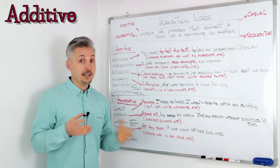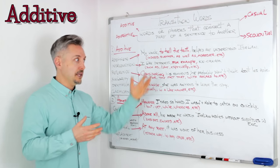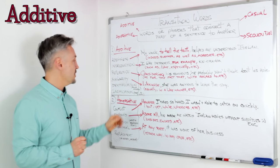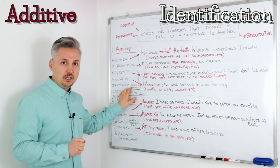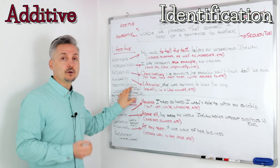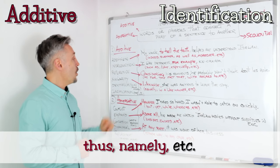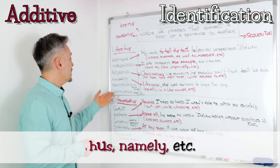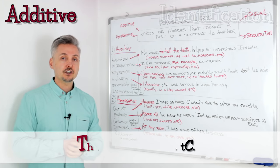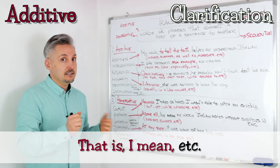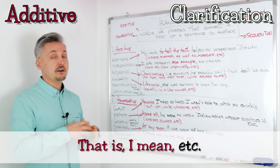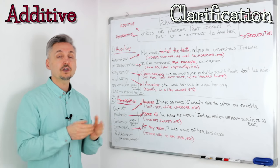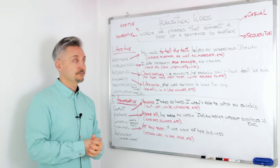For the last two subgroups I didn't give an example because of space, so I'll just give you some of them. Identification: we use 'thus' or 'namely.' Clarification: 'that is,' 'I mean.' These are all transition phrases that you can use in your sentences.